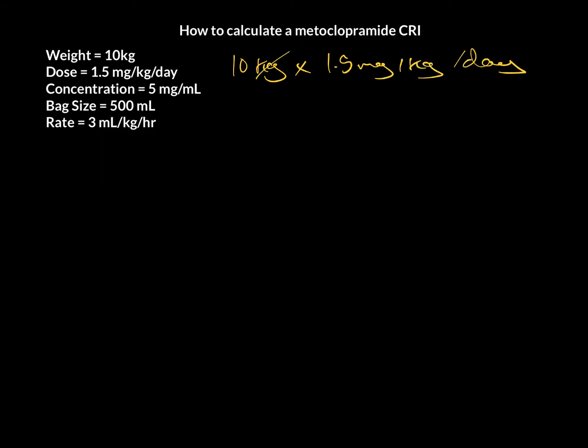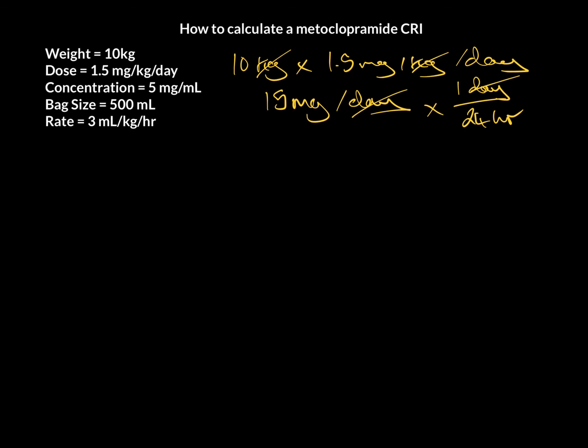When we do this, our kilograms will cancel out, leaving us with 15 mg per day. Not overly helpful, so we need to convert this to mg per hour. And we know that in one day, there are 24 hours. So, our day is going to cross out, and that's going to leave us with approximately 0.63 mg per hour.